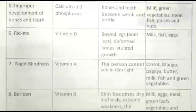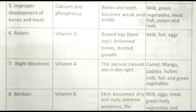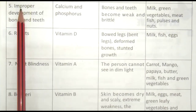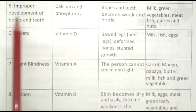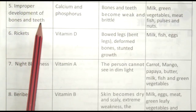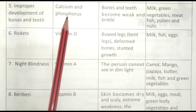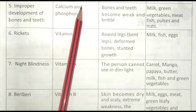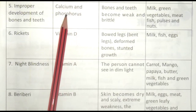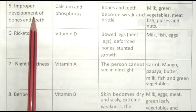Hello friends, today I am going to start 5th class EBS book lesson 12, shortage of food, 4th part. Improper development of bones and teeth — Anuchet thaddiyon aur danton ka vikas. This disease is caused by deficiency of Calcium and Phosphorus — Calcium aur Phosphorus ki kami se ye bimari hoti hai.